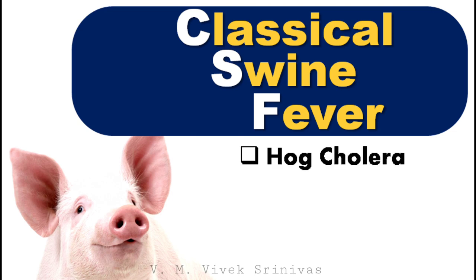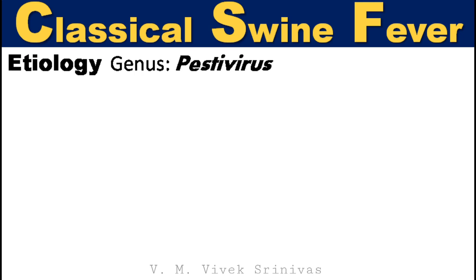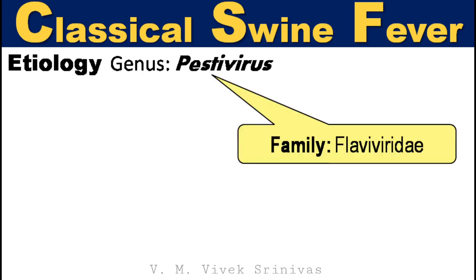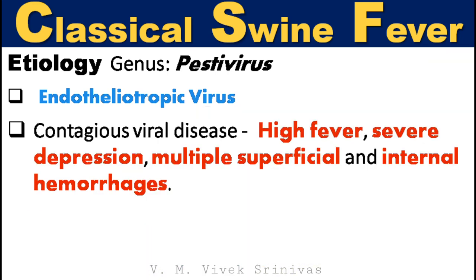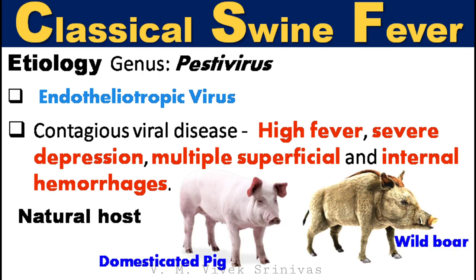The other name for this infection is hog cholera. This disease is caused by the genus Pestivirus of the family Flaviviridae. Based on tissue tropism, this virus targets endothelial tissues, so it is termed an endotheliotropic virus. This is a contagious viral disease characterized by high fever, severe depression, and multiple superficial and internal hemorrhages in pigs and wild boars.